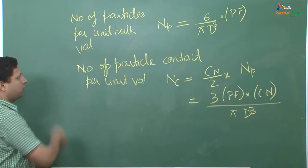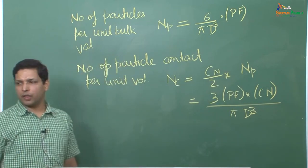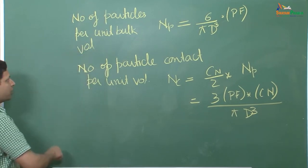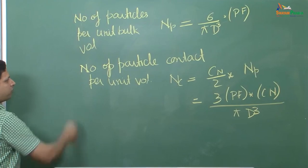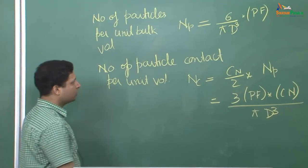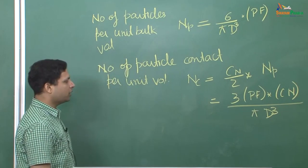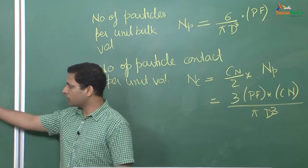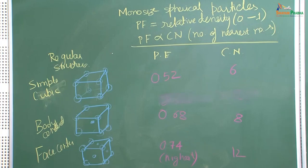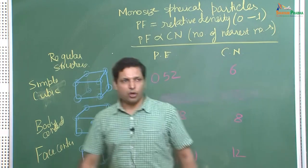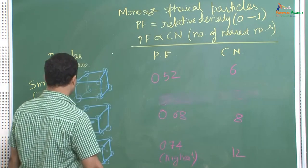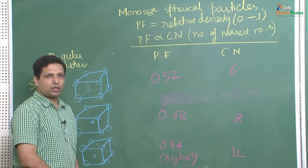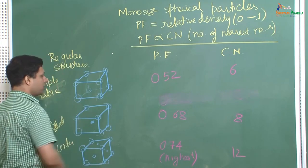We can define the number of particles per unit bulk volume Np = (packing fraction) / (volume per particle), and the number of particle contacts per unit volume Nc = (coordination number / 2) × Np. For Np = 6/(π*d³) × Pf, this becomes Nc = 3 × Pf × Cn, written in generalized terms applicable even to non-regular structures.